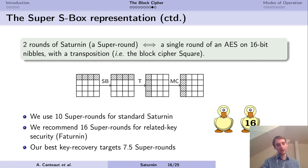This means that 4 rounds of Saturnin correspond to 2 rounds in some big AES construction. So 2 rounds of Saturnin are actually a single round of something that looks like an AES, operating on 16-bit nibbles, with a transposition instead of a shift rows. It's a bit like the block cipher Square, and it also has a different key schedule. This is why we use 10 super rounds for standard Saturnin, because the attacks we have on standard Saturnin actually look like the attacks on AES-128. For related-key security, we recommend 16 super rounds, which is a variant called Faturin, and the best key recovery we managed to write targeted 7.5 super rounds of Saturnin. A super round means 2 rounds, but it looks like a single round of a big AES.